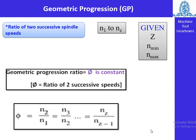The second type is geometric progression (GP), where the ratio of two successive spindle speeds is constant. Unlike arithmetic progression where the difference is constant, here the ratio φ is constant. So φ = n2/n1 = n3/n2 = ... = nz/nz−1. The ratio φ of successive spindle speeds is constant in geometric progression.